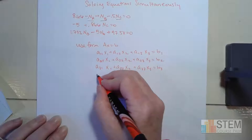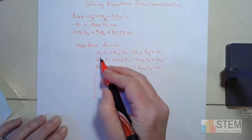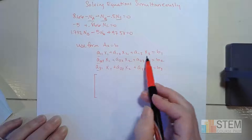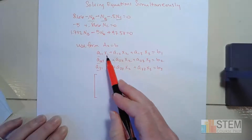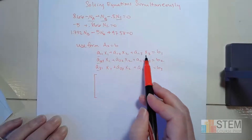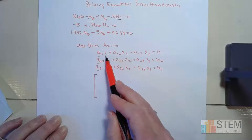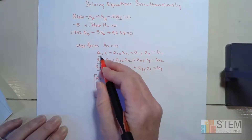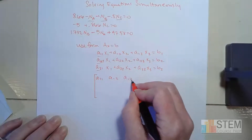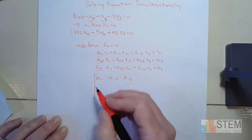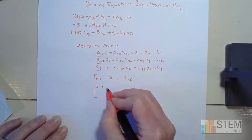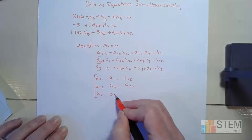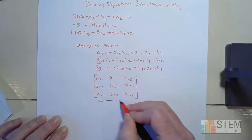Now we form matrix A by pulling out these coefficients. One thing to notice is that x₁, x₂, x₃ are all in the same order in all three equations — the first variable is always x₁, then x₂, then x₃. So let's pull off the coefficients and put them in matrix A: A₁₁, A₁₂, A₁₃ from the first equation; A₂₁, A₂₂, A₂₃ from the second; and A₃₁, A₃₂, A₃₃ from the third.